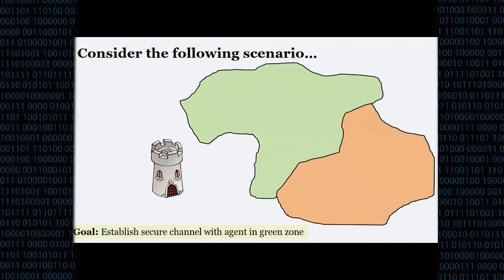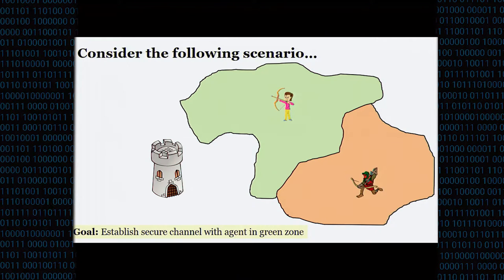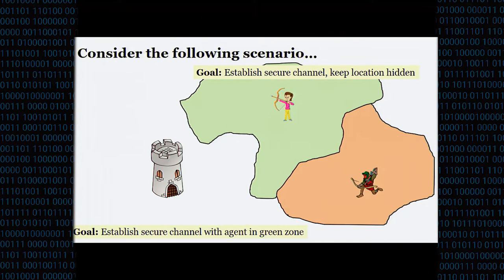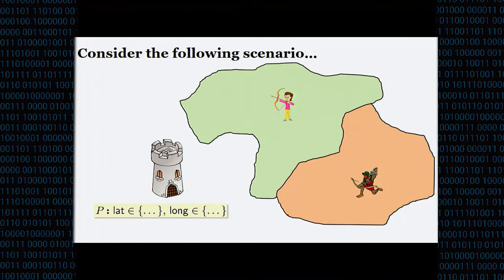Let's consider the following scenario. Suppose we have some military base somewhere and it wants to establish a secure channel with an agent in the field, and particularly with an agent in this green zone. So we can look at this more closely. The base will have some policy P that specifies some set of latitudes and longitudes that specify this green zone.